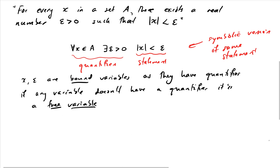This statement applies to every single value of x in a set A. So we read it as: for every choice of x in set A, there exists a corresponding epsilon. First step: choose an x. Second step: there exists a corresponding epsilon for that particular choice of x.